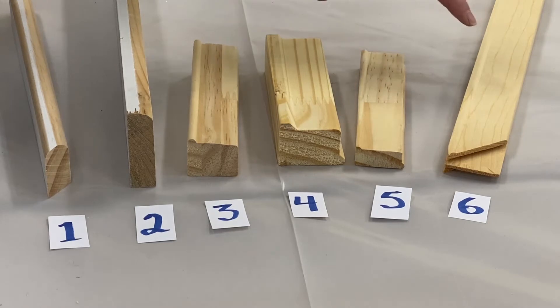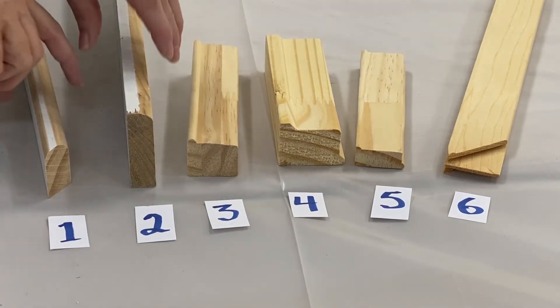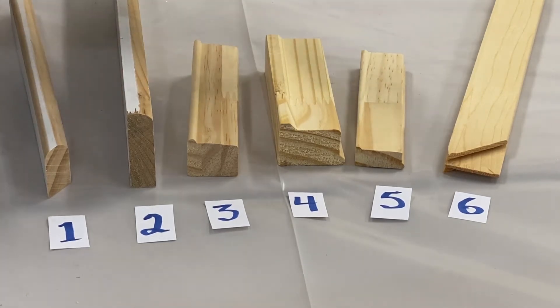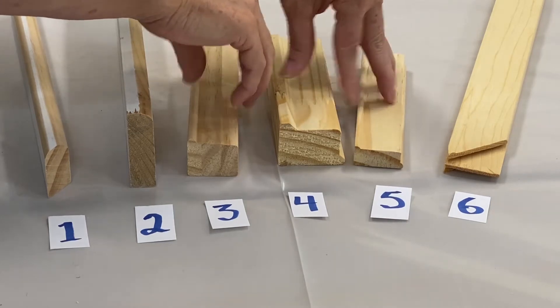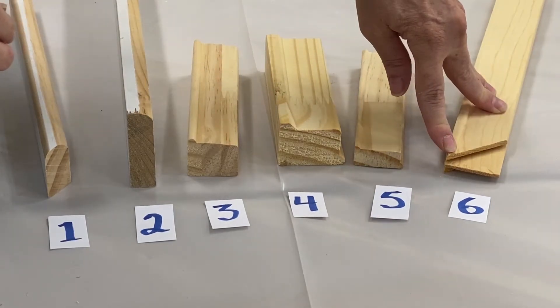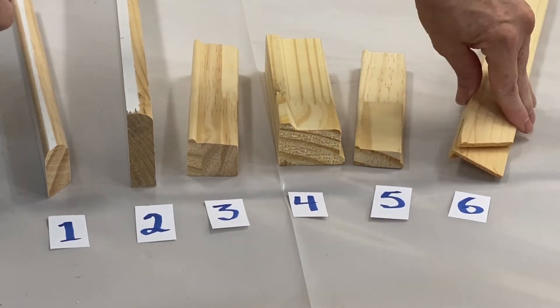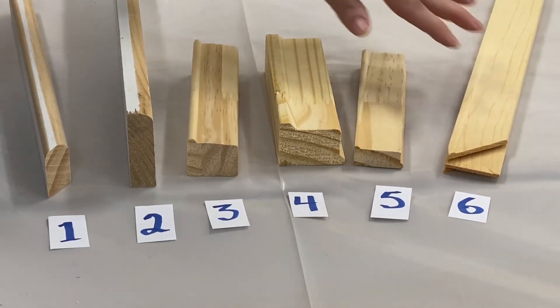We generally use six different types of stretcher bars: ones that we mill in-house, ones that we buy already milled, and ones that are milled and finished in the corners with tongue and groove corner joints. These you can find at most art stores.